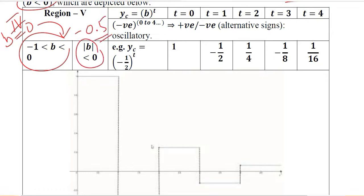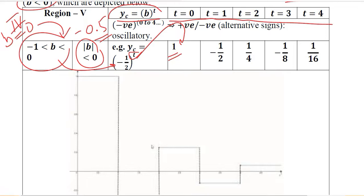The absolute value of minus 0.5 is 0.5, which is positive. Using the complementary function formula, where capital A, the arbitrary constant, is considered equal to 1, we will experiment with different values of t starting from zero to four, and see how it determines the overall pattern of the yc component. Substituting b = −1/2, when t = 0, anything raised to the power zero equals 1.